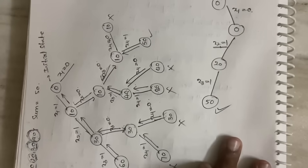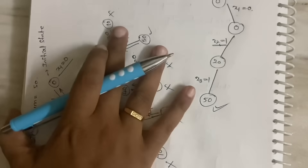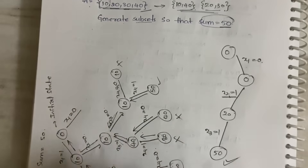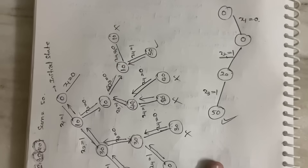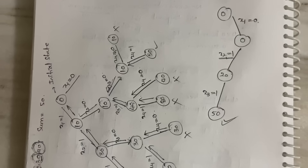This is your complete state space tree, which shows the two possible solutions. Initially we said we have two possible solutions by inspection, and I have represented both those solutions using the backtracking algorithm. This is how the backtracking algorithm works. That's all about this video. Thanks for watching till the end. If you enjoyed and understood what I explained, hit the like button and consider subscribing to my channel. Let's meet up soon in the next video.